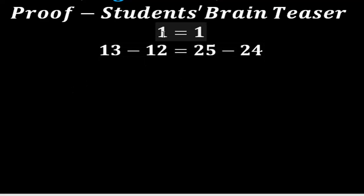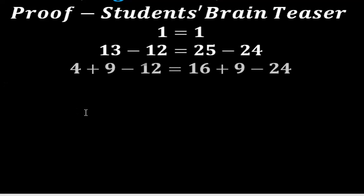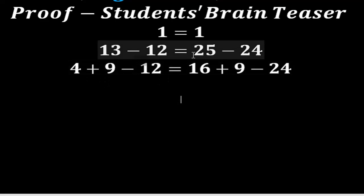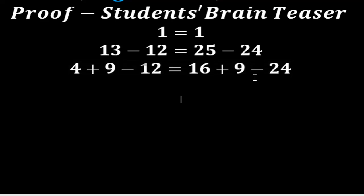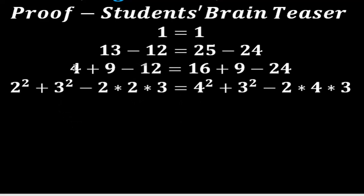I'm going to start with one equals one, which is true. Then I write this first one as 13 minus 12, and the second one as 25 minus 24, which is true. Then I write 13 as 4 plus 9 and 25 as 16 plus 9, giving us 4 plus 9 minus 12 equals 16 plus 9 minus 24, which is true.